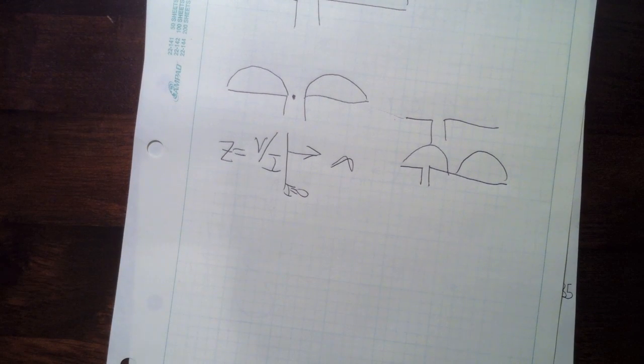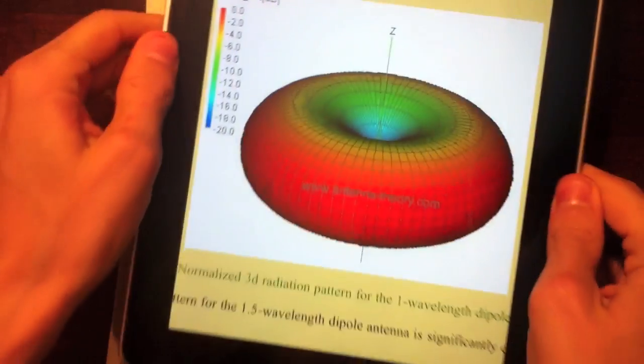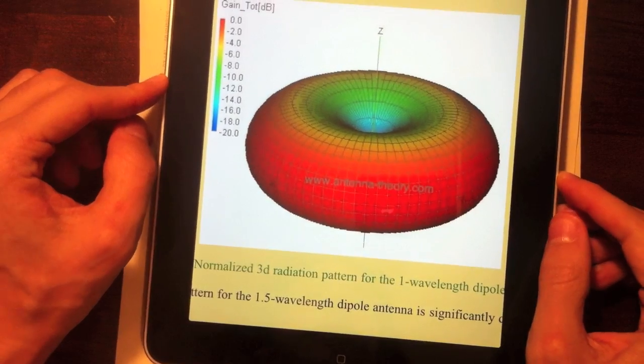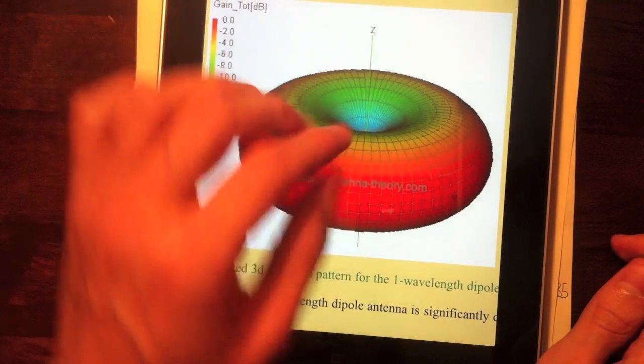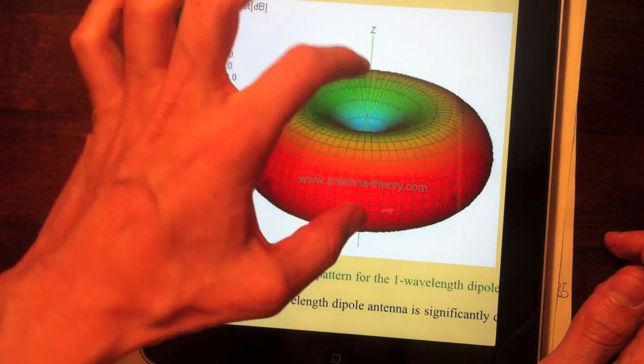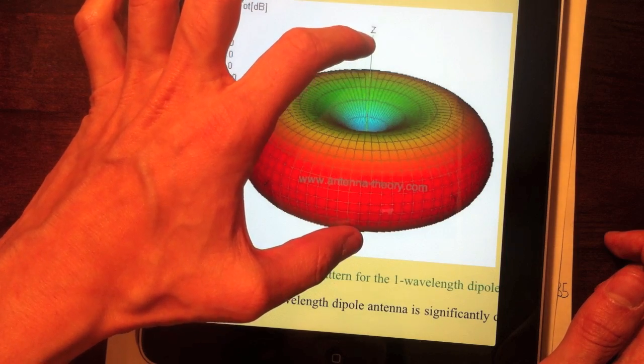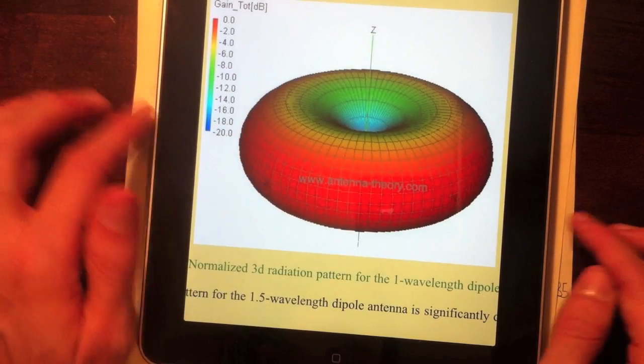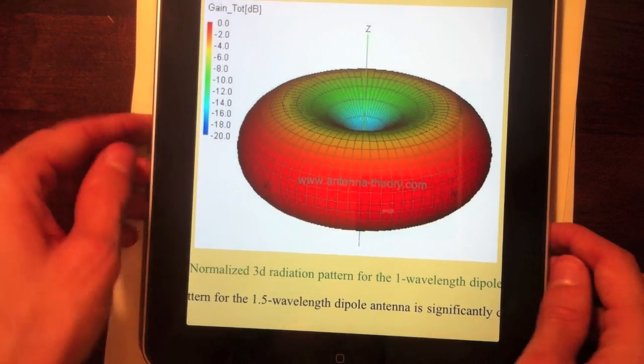As for the shape of the radiation pattern, so for a half wavelength dipole antenna, you tend to have something like this. It's donut shaped. And so the antenna is oriented along the z-axis here. So it's just a wire along the z-axis. And you get this omni-directional pattern that's donut shaped.